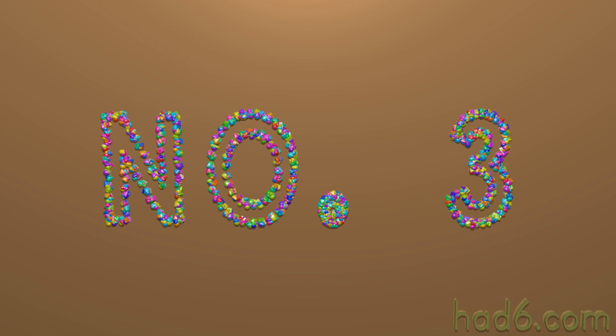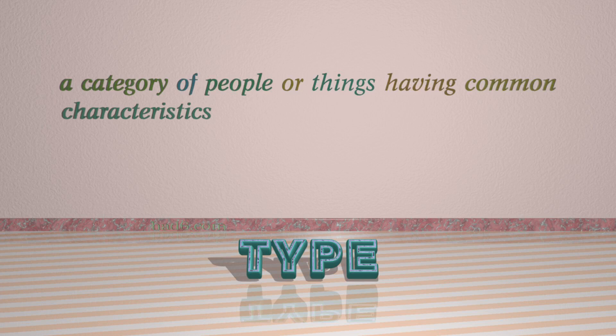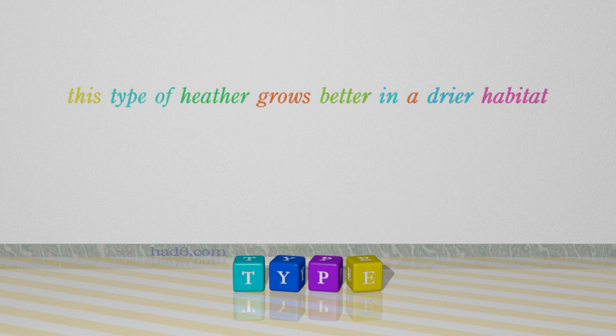Number 3: Type. Which means a category of people or things having common characteristics. For example: This type of heather grows better in a drier habitat.